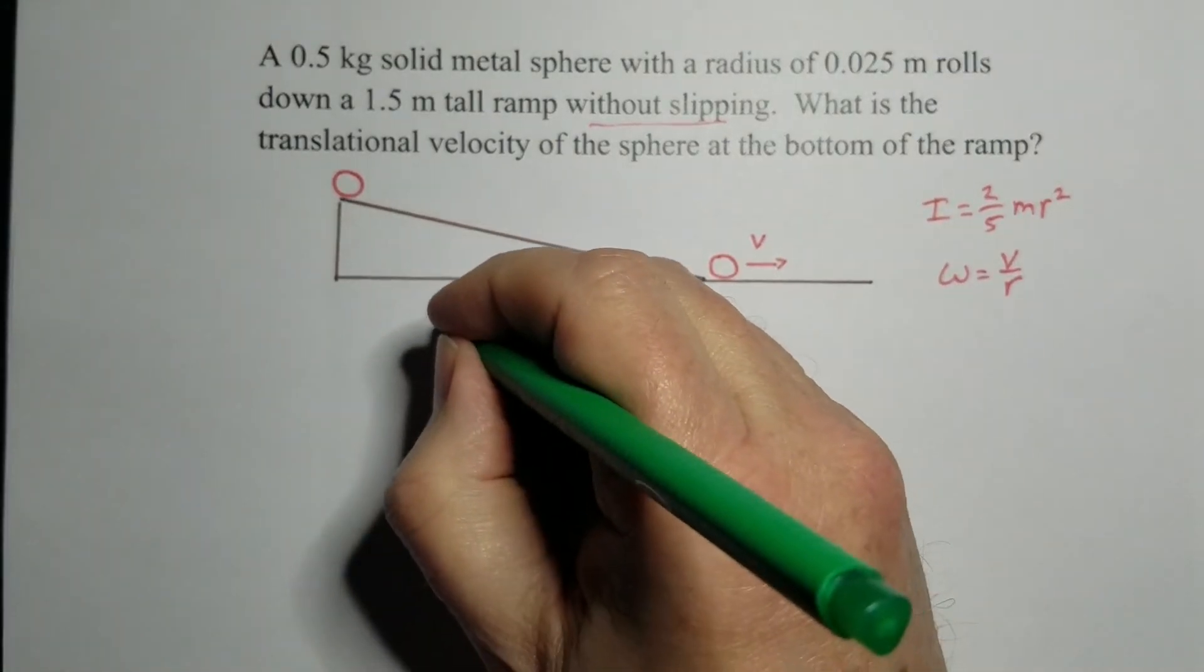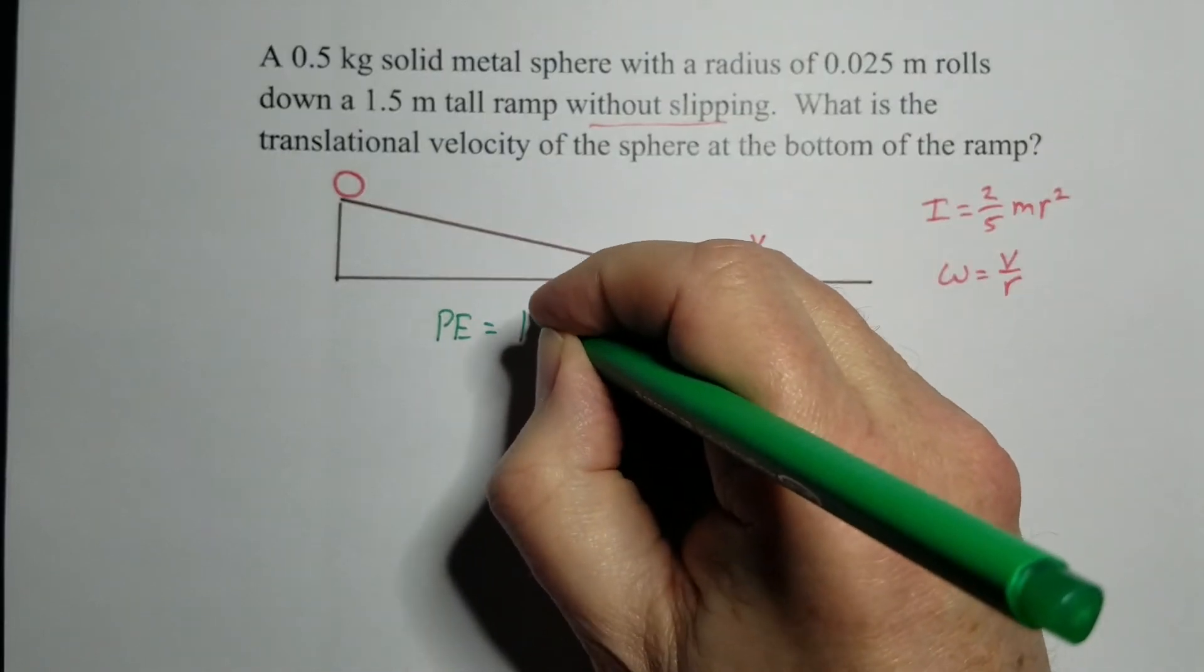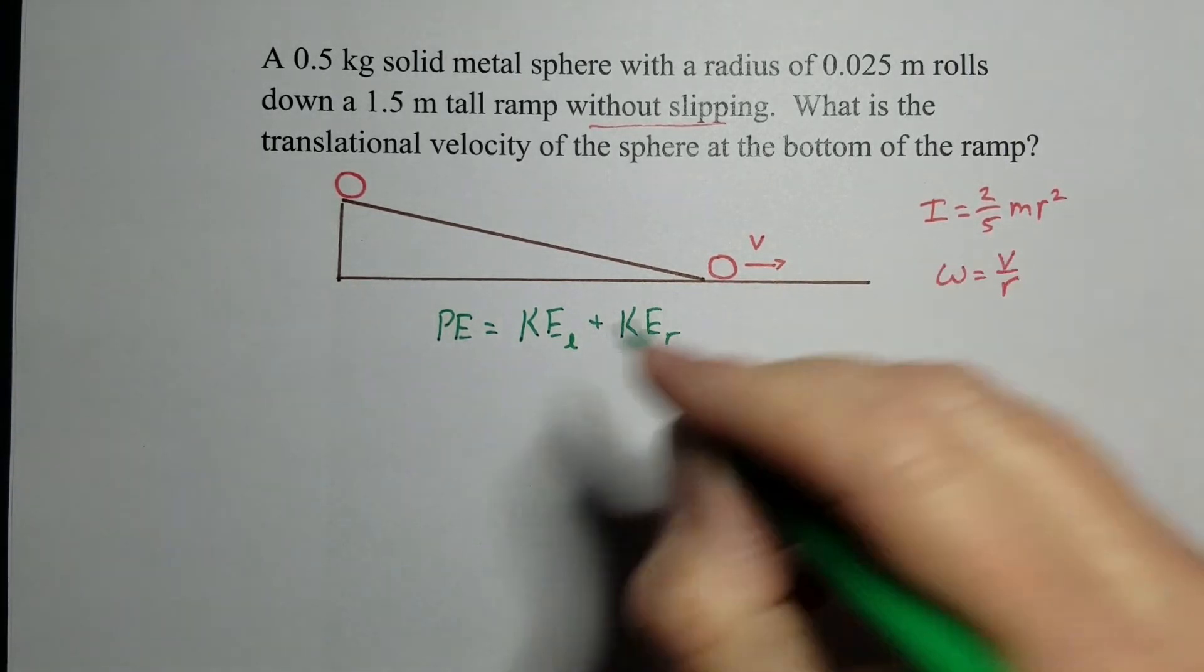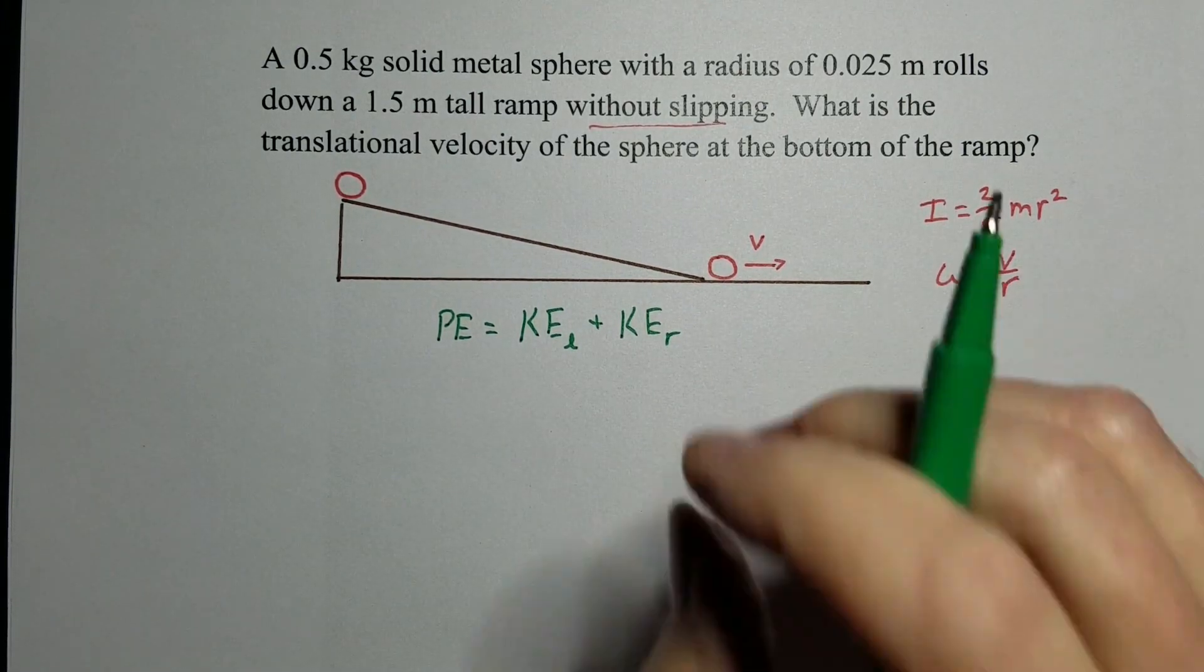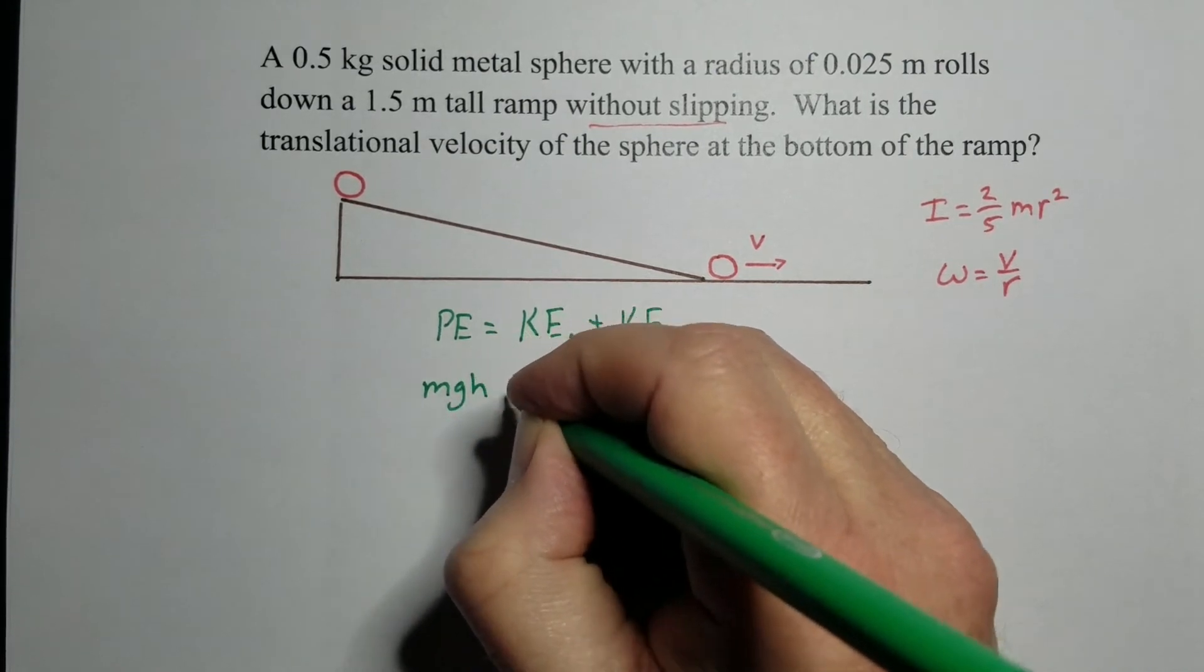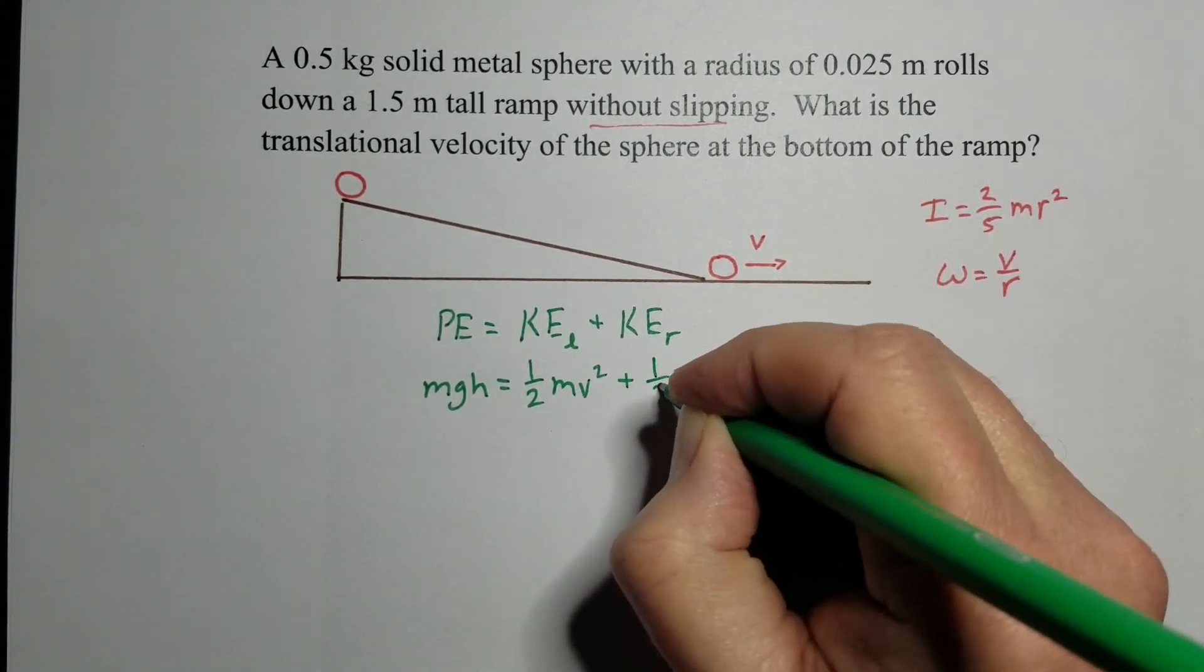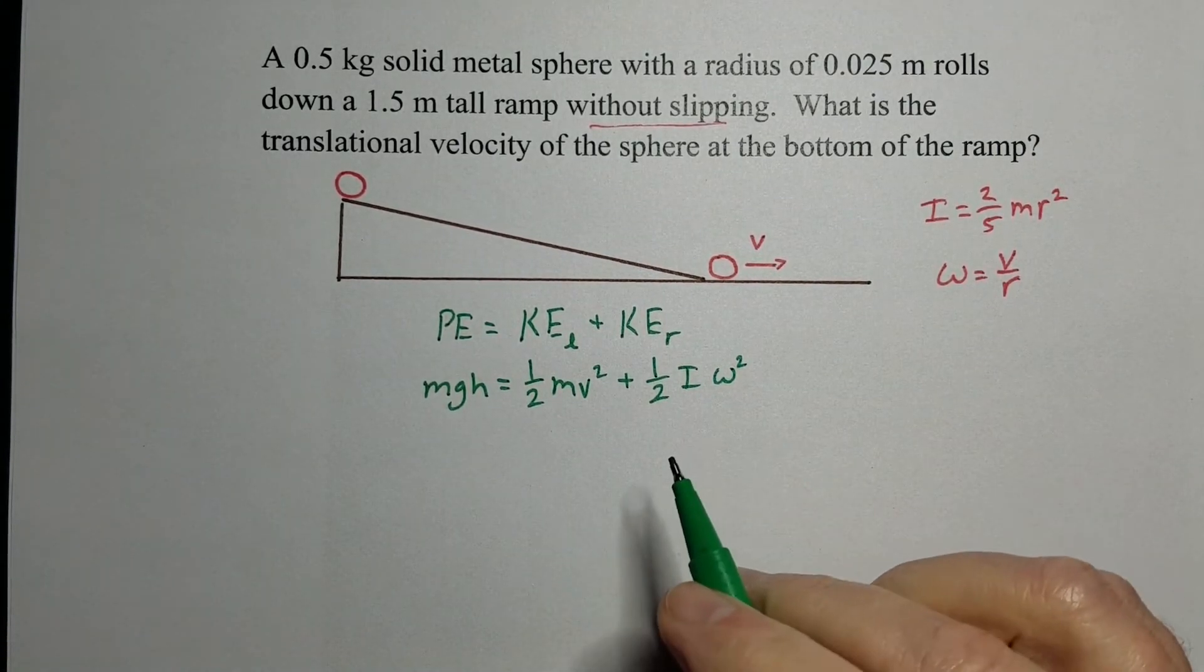So at the top, we just have potential energy. As it rolls down to the bottom, we'll actually have two types of kinetic energy, a linear form plus a rotational component. And so if we just take this and actually just substitute in the equations. So, potential energy is mass times gravity times the height. Kinetic energy is one-half m v squared. And rotational kinetic energy is one-half i omega squared. Now, this is where we started off on the last problem.